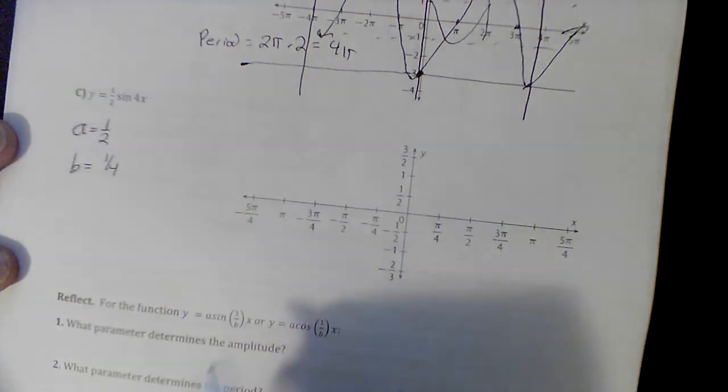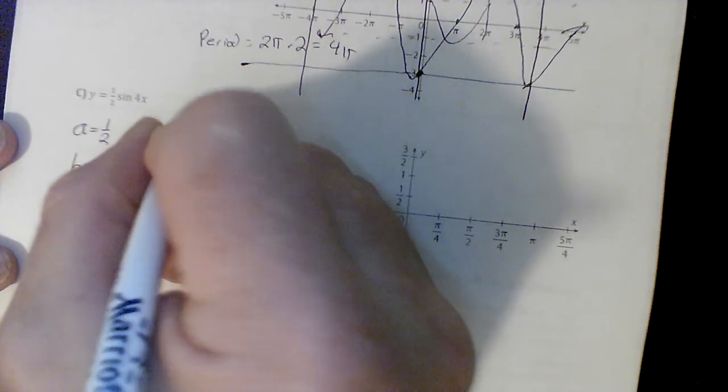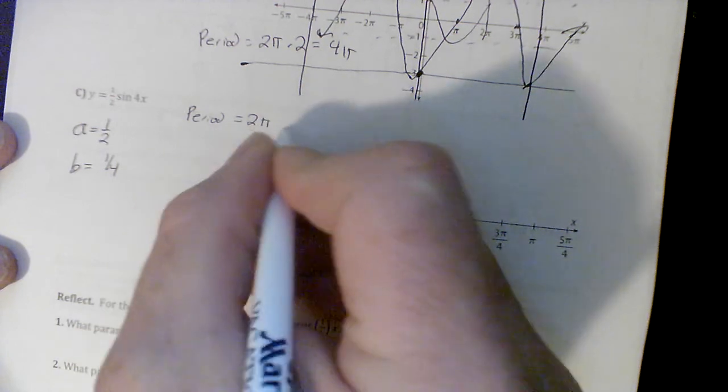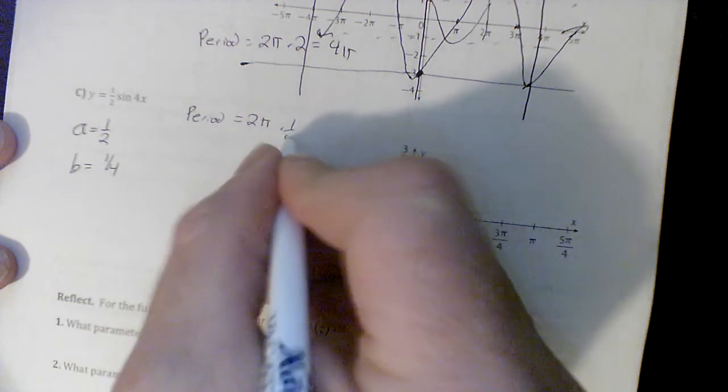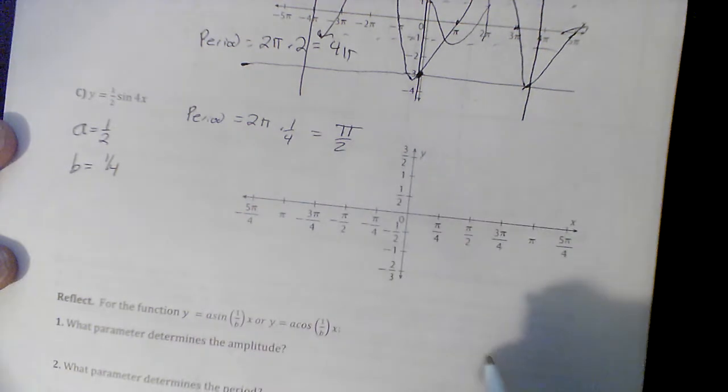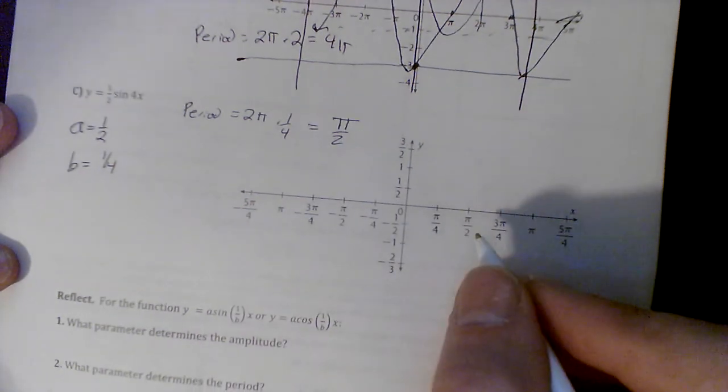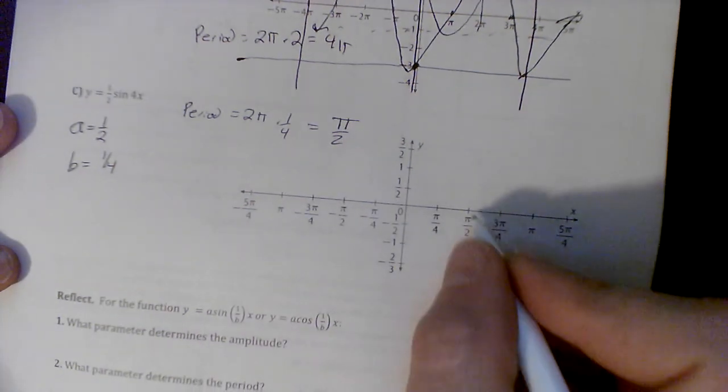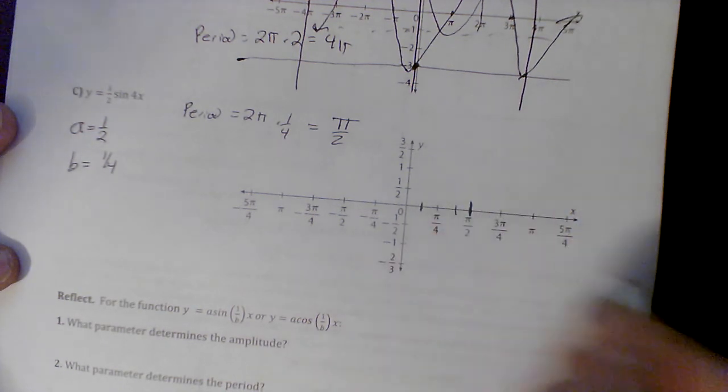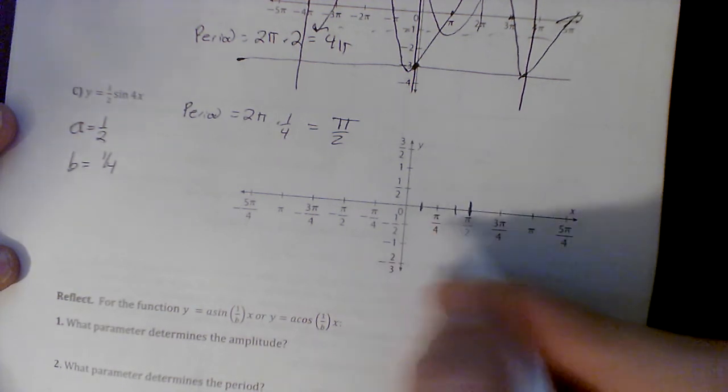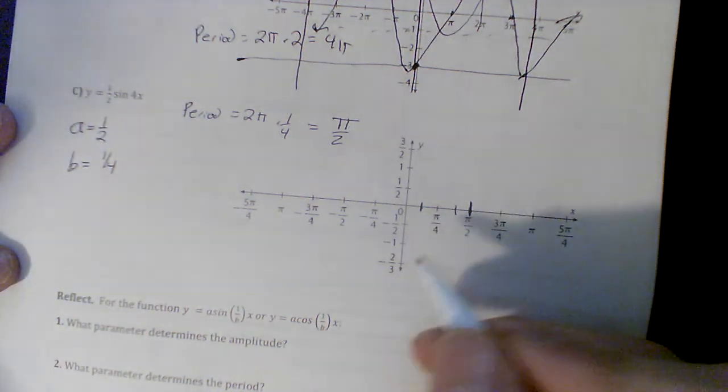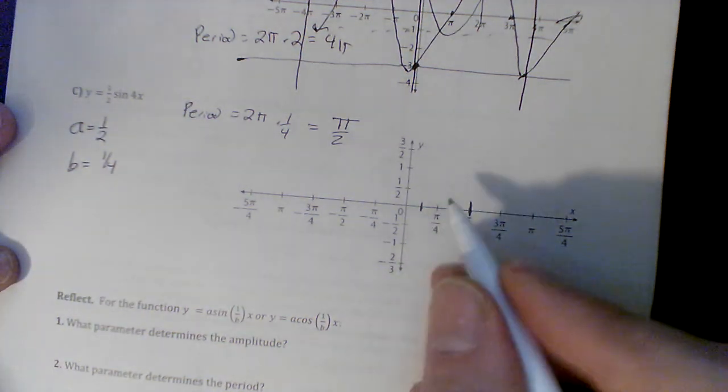We've got our a value is 1/2, our b value is 1/4 - the reciprocal of that. So my period, which used to be 2π, is now 1/4 of that, so my period is π/2. If I go to π/2 right here, it's actually every eighth, and I try to divide mine up into quarters so I can see when it goes from bottom to top to bottom, or middle.